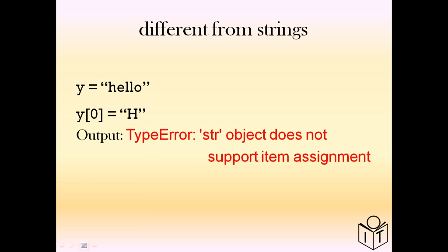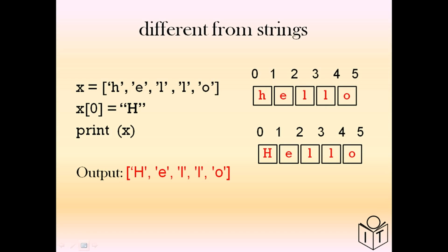In Python, the list is quite similar to strings — you'll see quite a few similar functions and ways strings and lists can be used, but they're not the same. Here we have the string 'hello' and if we try to change the first letter in the string it won't allow it. Whereas with lists it will. We have the list ['h','e','l','l','o'] and we want to change the first element to an uppercase 'H', and it will allow us to do that.